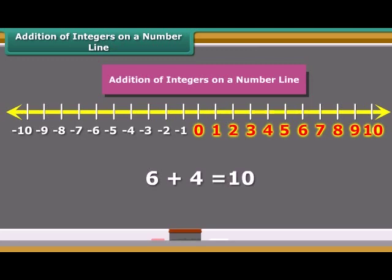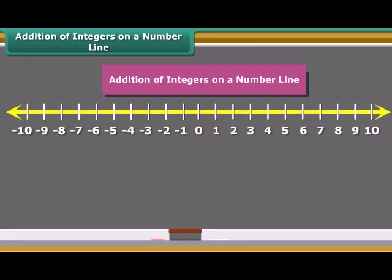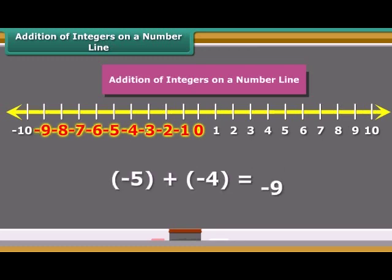Let us add two negative numbers, minus 5 and minus 4, on the number line. First, we move five steps to the left of 0, reaching minus 5. Then we move four steps to the left of minus 5 and reach minus 9. So we see: when we add two positive integers, their sum is a positive integer; when we add two negative integers, their sum is a negative integer.